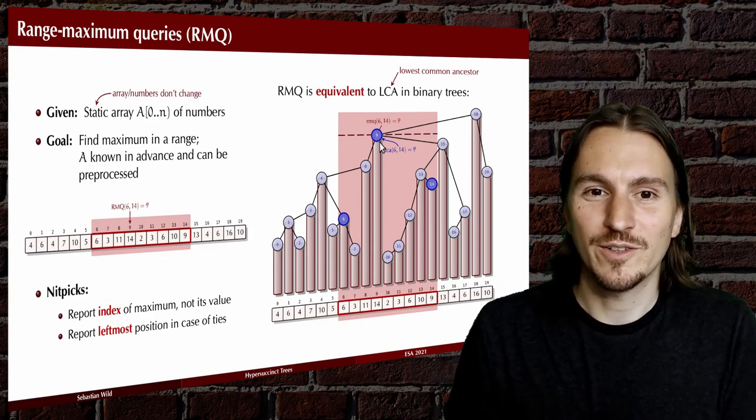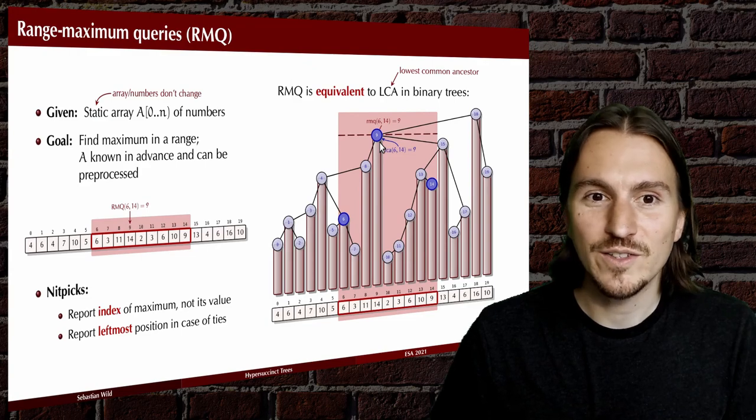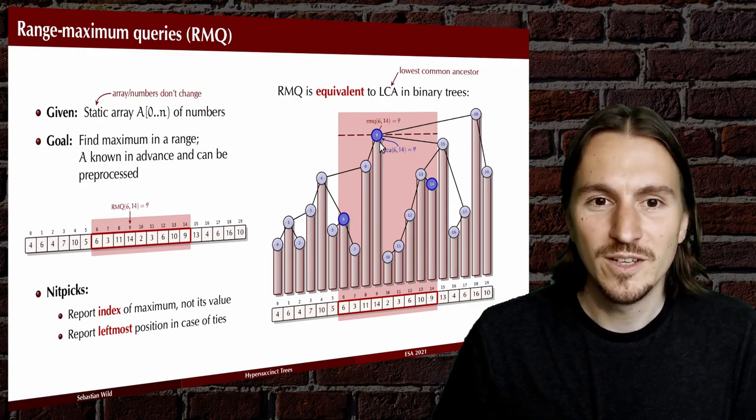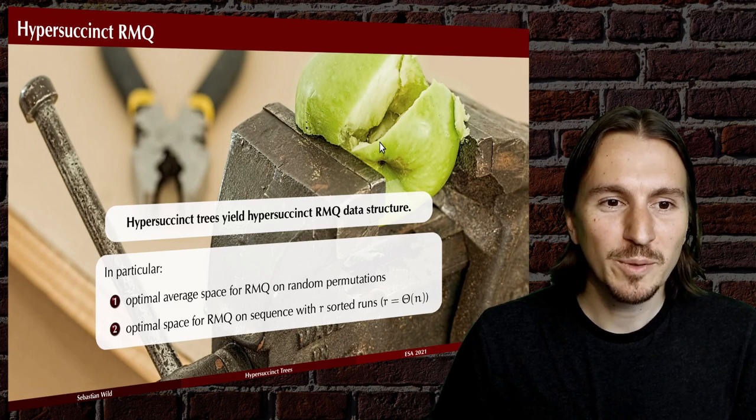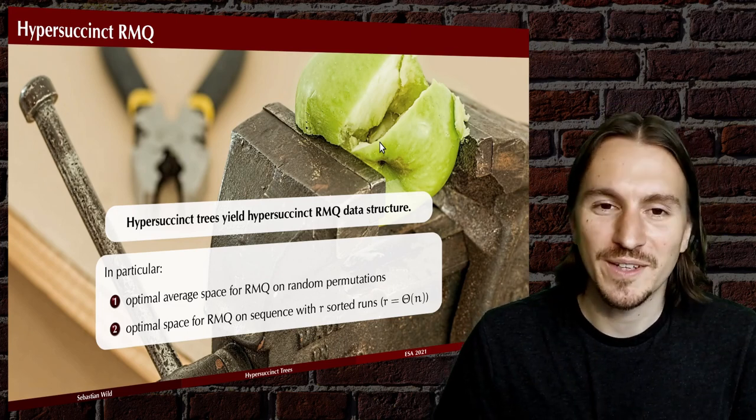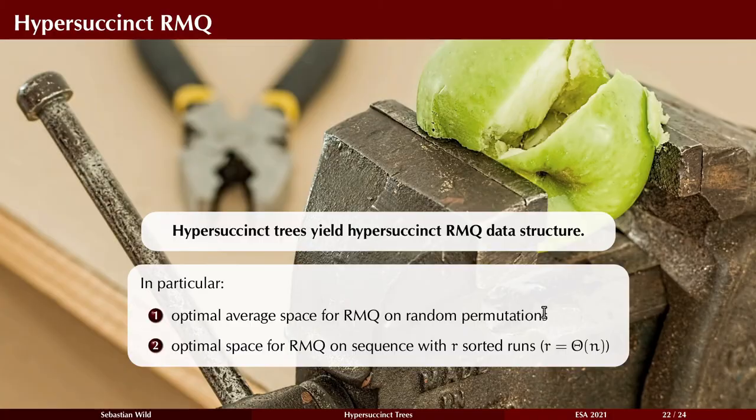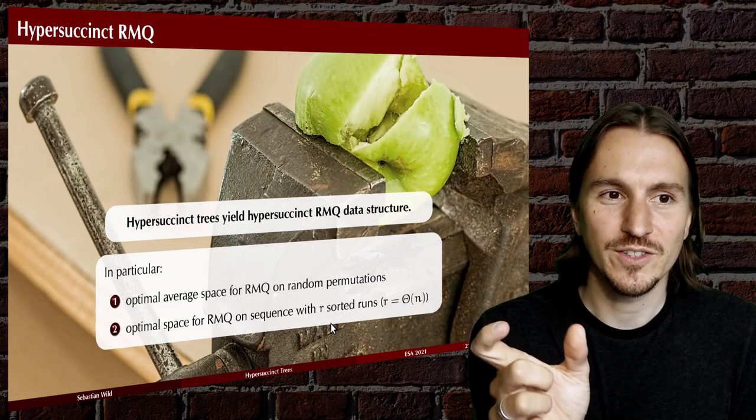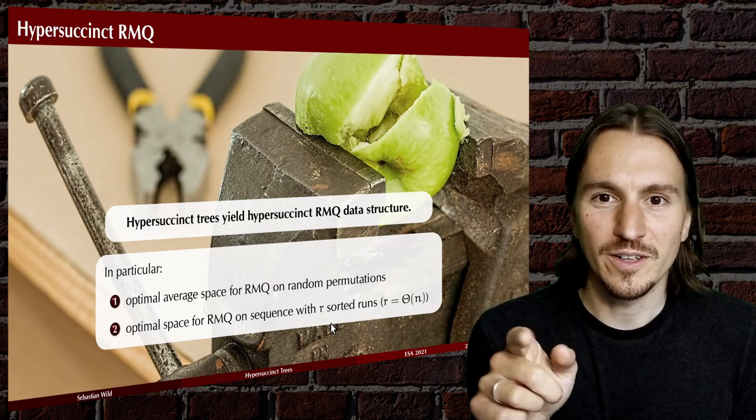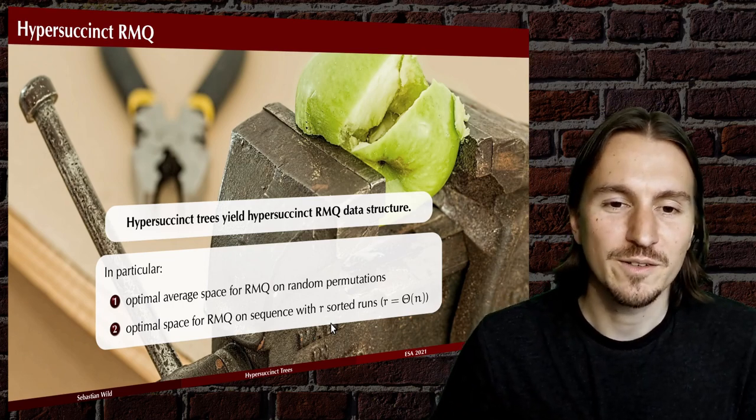And we can use a data structure that just works for binary trees and knows nothing about RMQ to solve that problem. If we apply our hyper succinct trees to that, then we obtain two new results. One is an RMQ data structure with optimal expected space for random permutations. And also an optimal space data structure for RMQ on sequences where we have R sorted runs, segments where the values are weakly increasing.